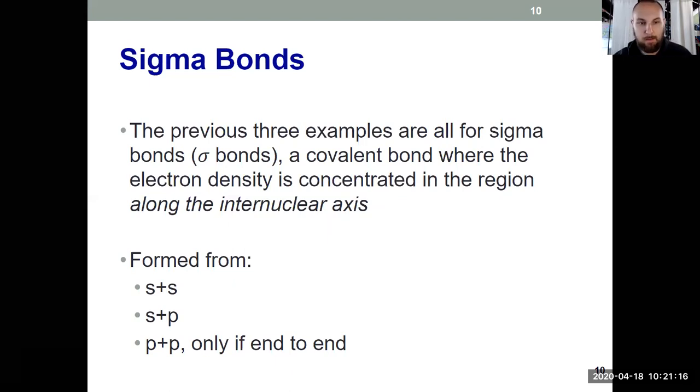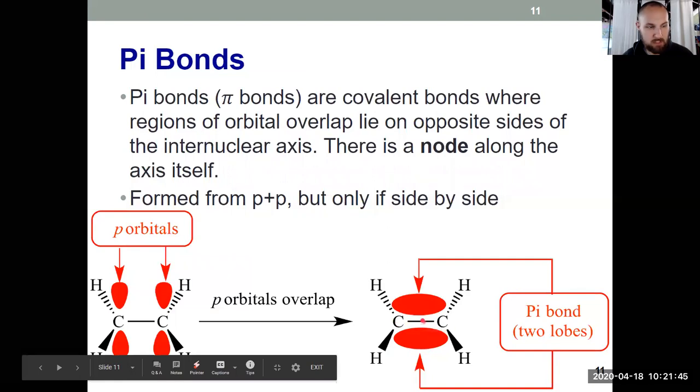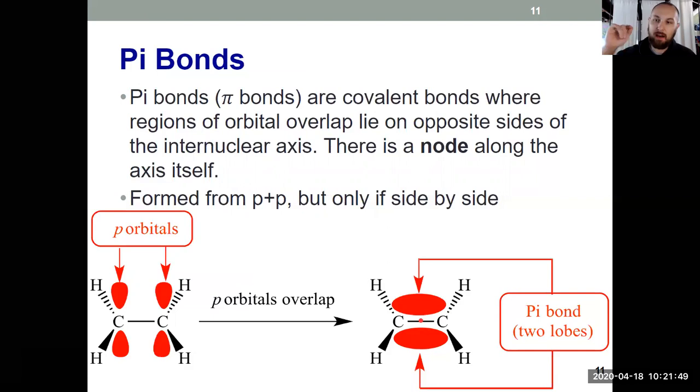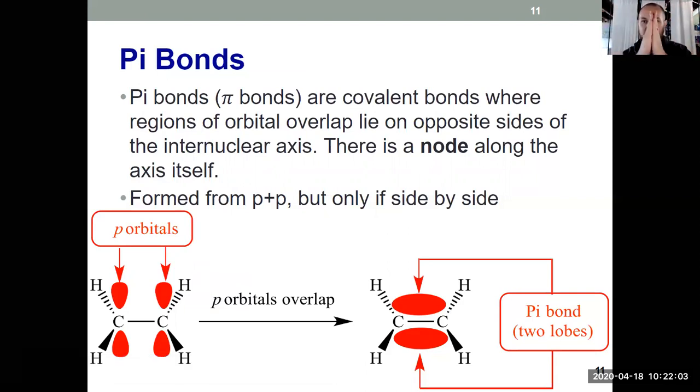We also have a pi bond. Pi bond, definition of that, are covalent bonds where the electron density is on opposite sides of the internuclear axis. So there's no electron density actually along the axis between the two nuclei because that space has already been taken up. You can't form a pi bond until you already formed a sigma bond. And the sigma bond takes up the space that's between the nuclei. The sigma bond would be taking up the space in here. So the pi bond goes outside of that. Pi bonds are above and below the internuclear axis. And there's only one way to form a pi bond, and that's by taking two P orbitals together. But now instead of going end to end, they're going together side to side. And you see they then overlap on the top and on the bottom, those two lobes.